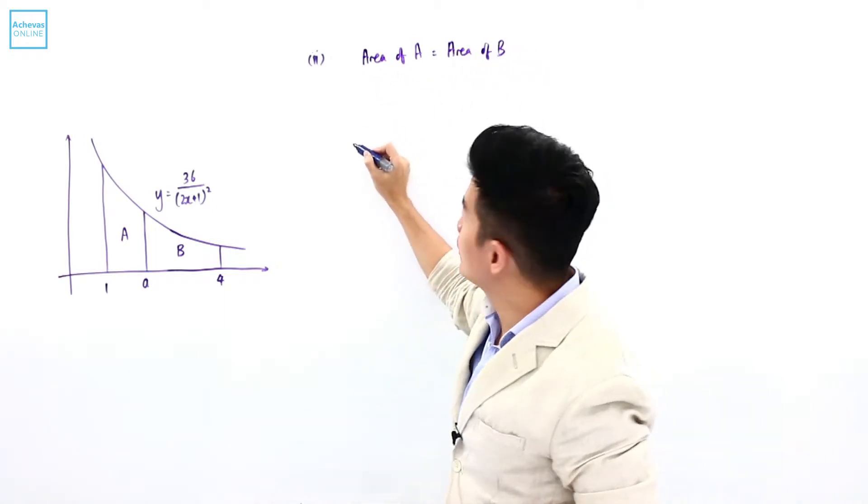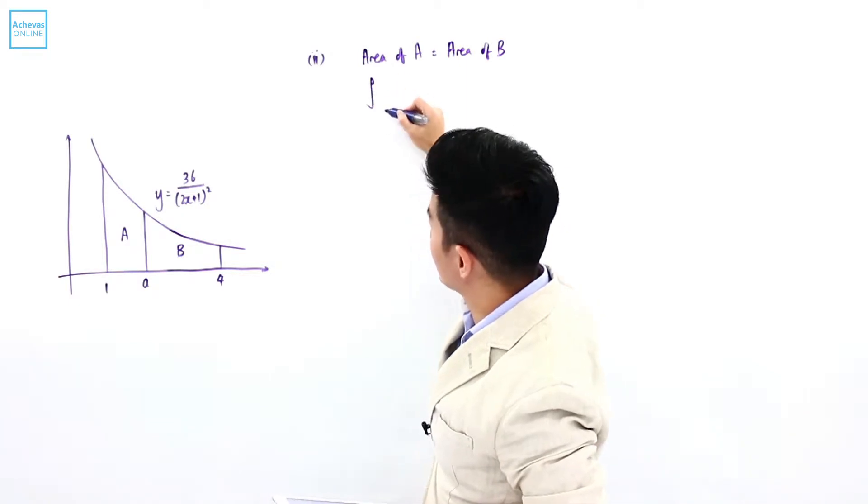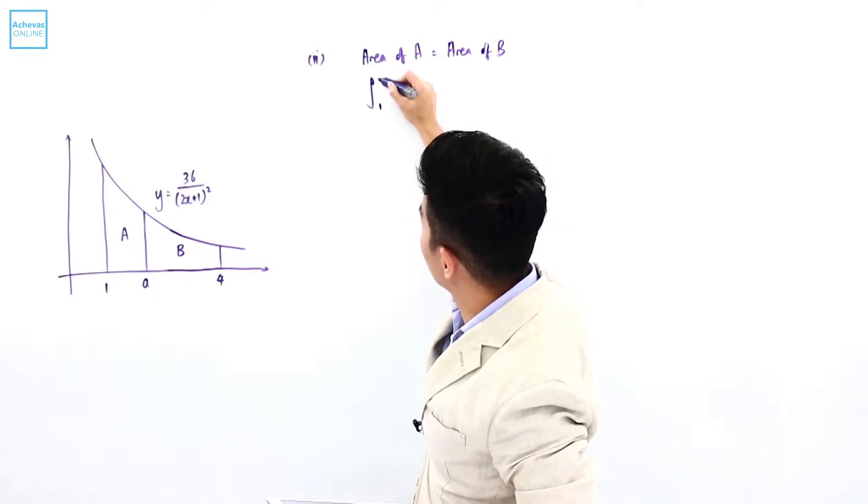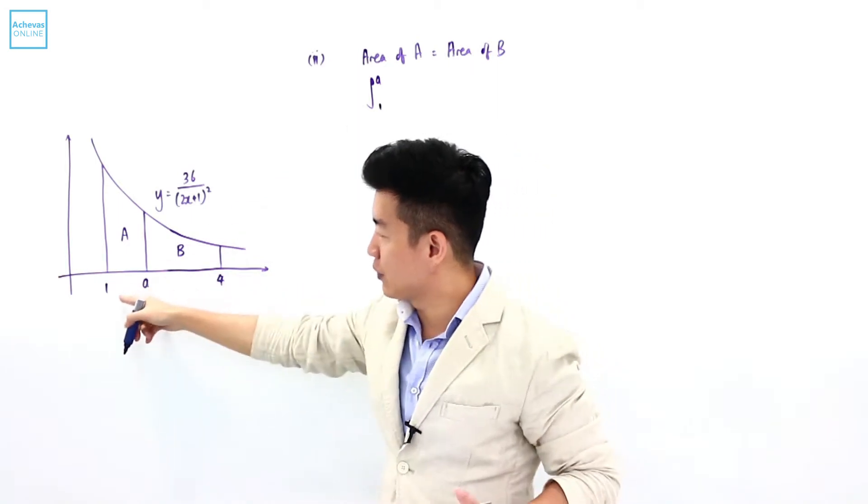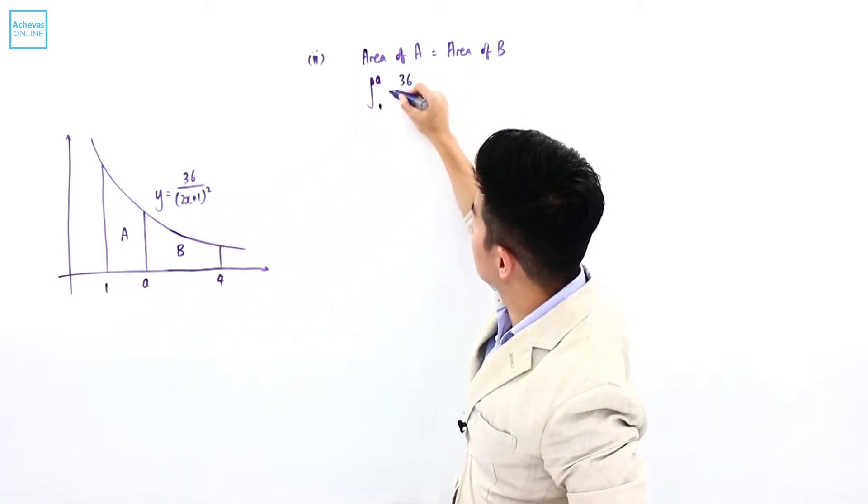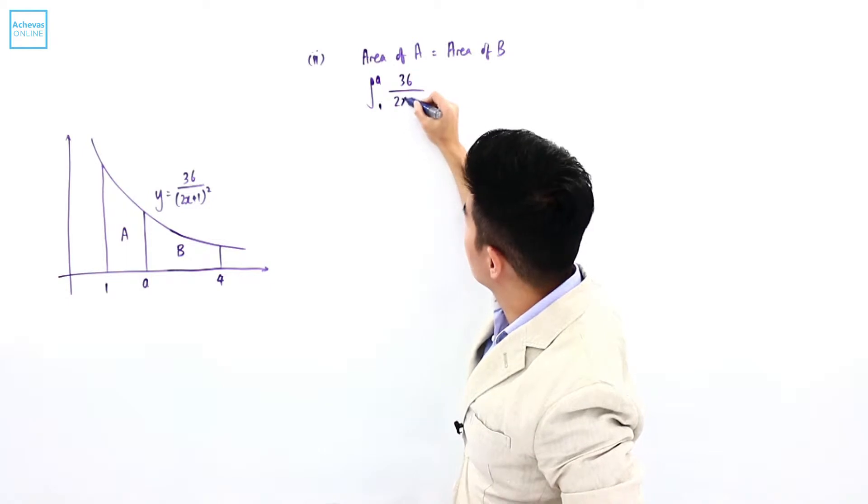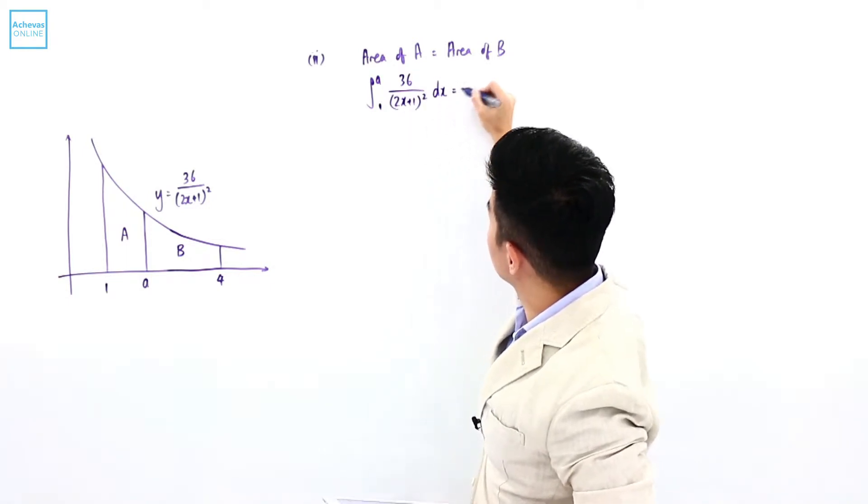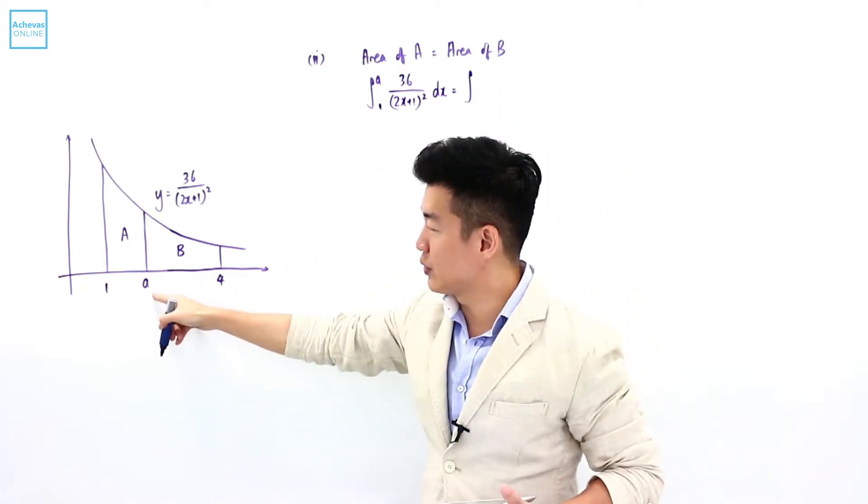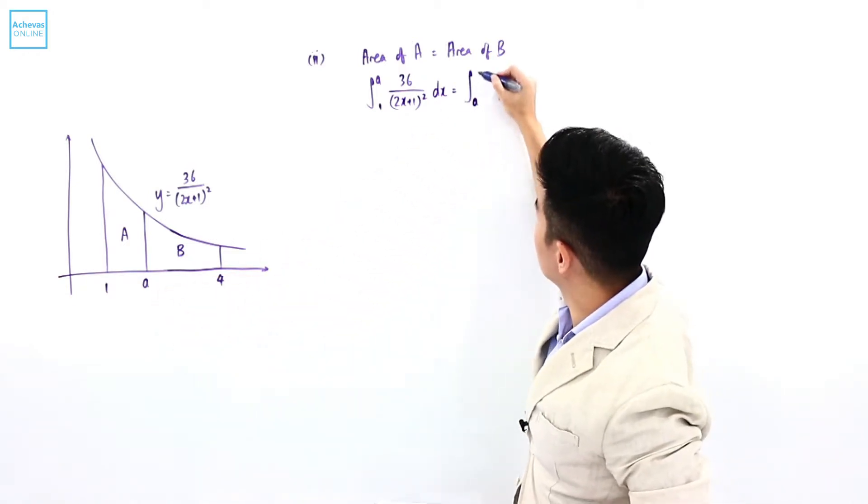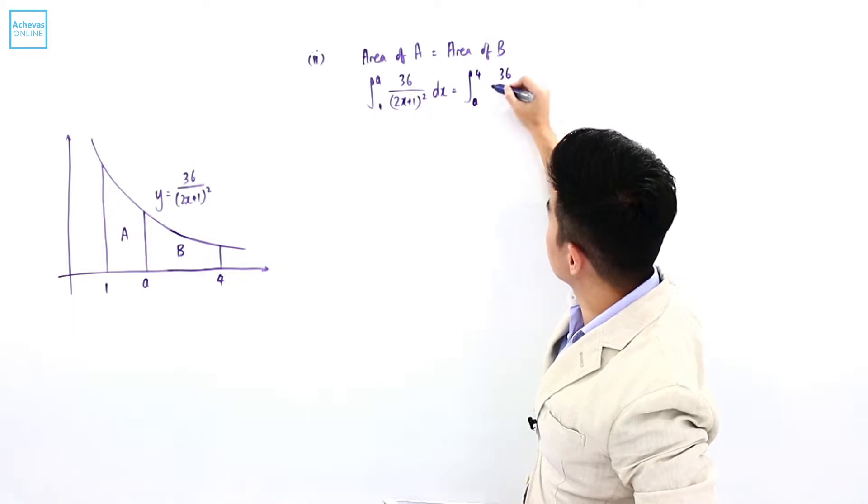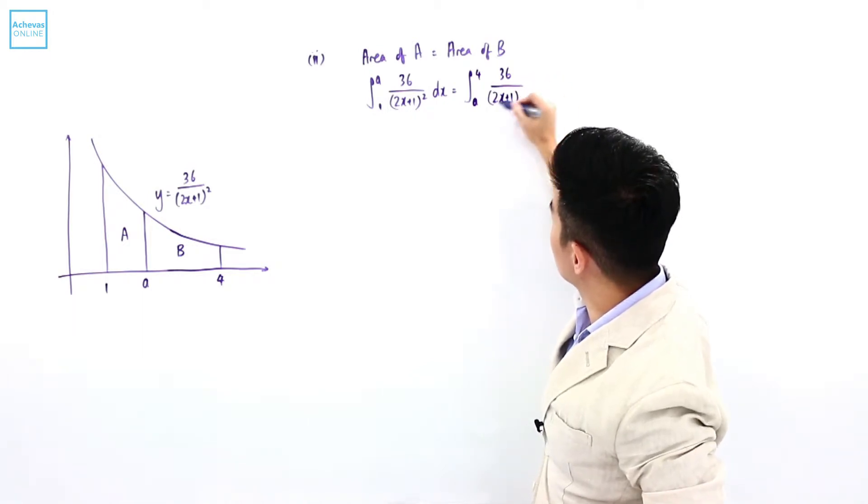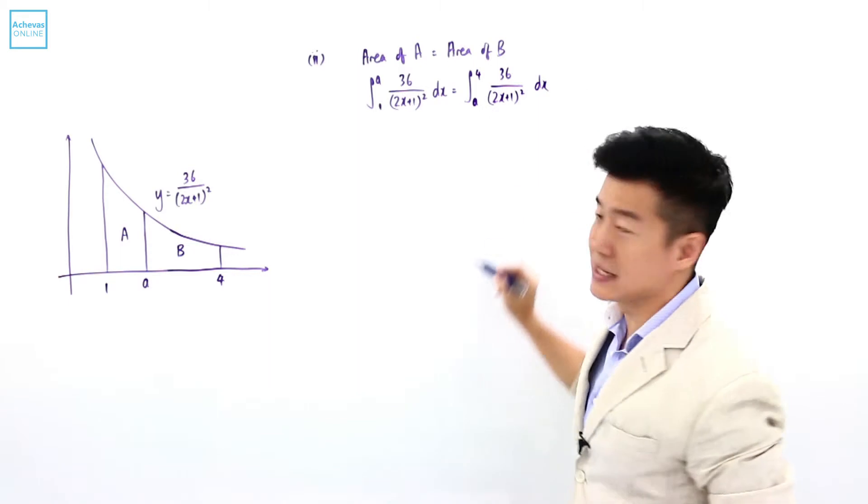To get the area of region A, we will apply integration from 1 to A of 36 divided by (2x + 1)². This is going to equal the integration from A to 4 of 36 divided by (2x + 1)² dx.